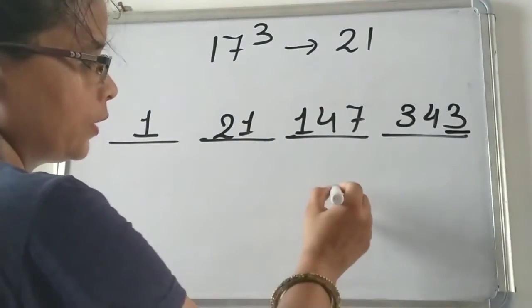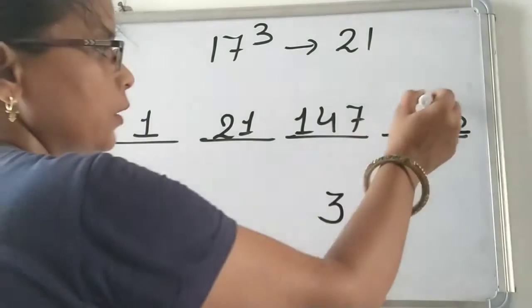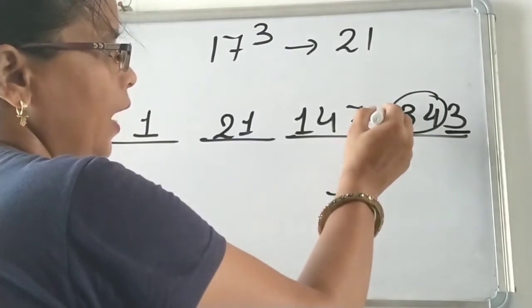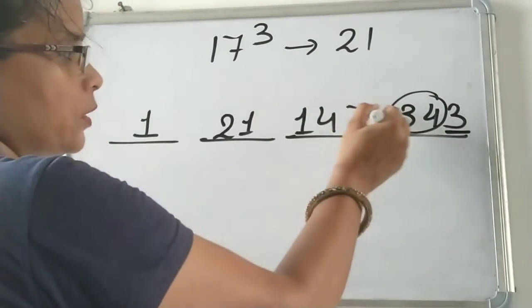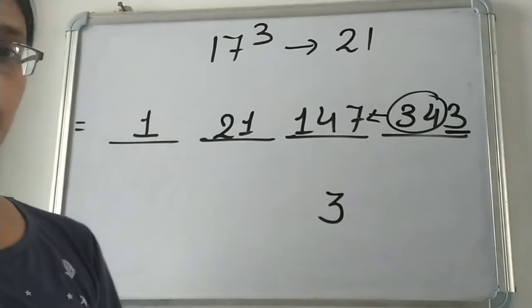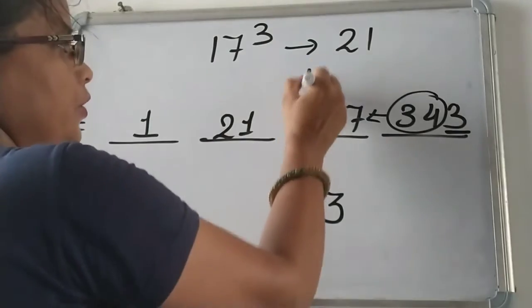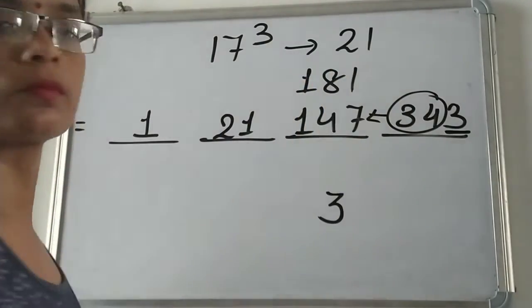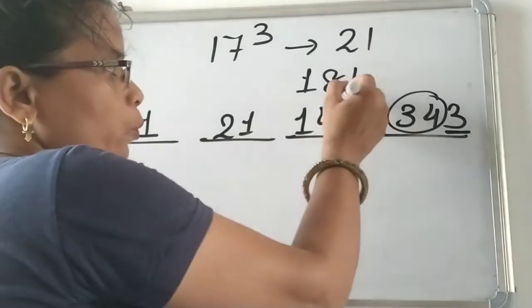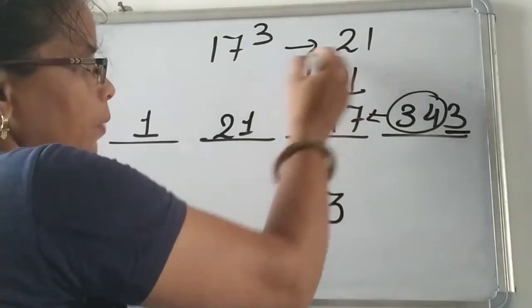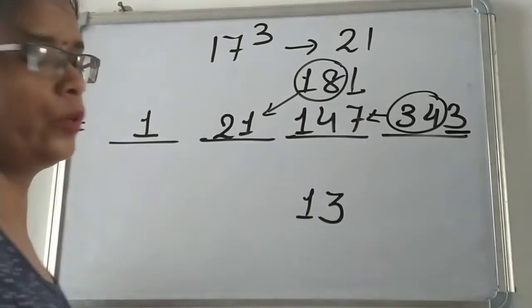And this 34 will be added in previous number and we get 181 here. Now again this 1 is here and 18 will be added to this 21.